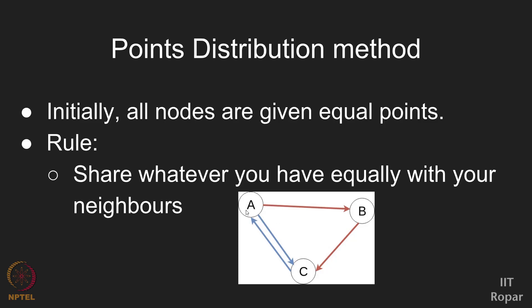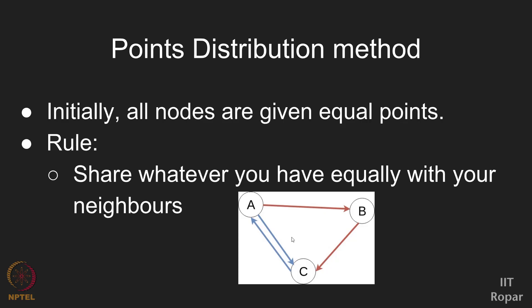Person A likes person B and person C. Person B likes just person C. Person C likes just person A. You are supposed to share whatever you have equally with all those you like — that is the rule. The sum of points will always be the same: if we give x points to each person, the sum is 3x, and that 3x is maintained throughout, though individual values will differ.